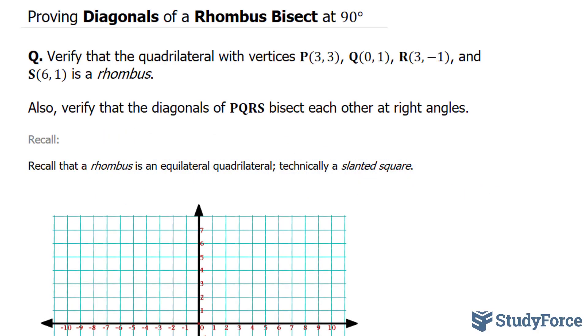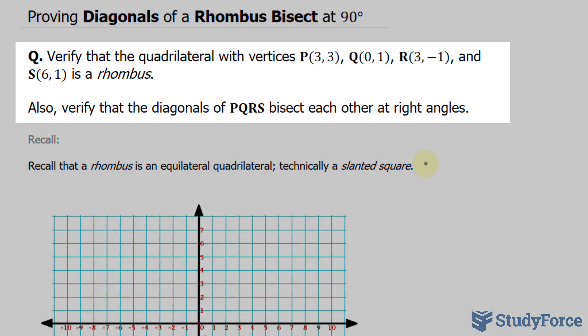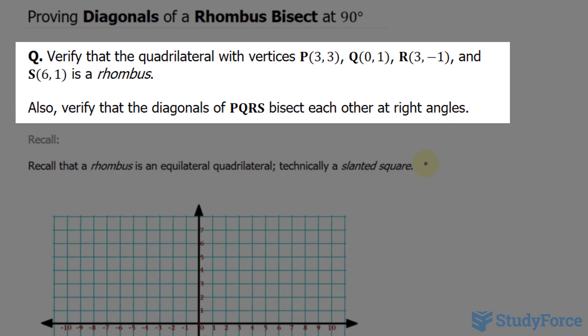In this lesson, I'll show you how to prove diagonals of a rhombus bisect at 90 degrees. The question reads, verify that the quadrilateral with vertices P(3,3), Q(0,1), R(3,-1), and S(6,1) is a rhombus. Also, verify that the diagonals of PQRS bisect each other at 90 degrees.